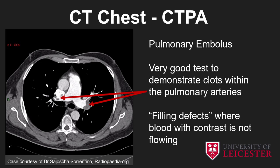Moving on to CT pulmonary angiogram — or CTPA. There are many indications for CT of the chest, but acutely CTPA plays a large role. It's a good test for clots within the pulmonary arteries. We give contrast and scan at a particular time when the pulmonary artery is nicely opacified and full of contrast. What you see are dark blobs within the pulmonary artery — filling defects — regions where blood full of contrast isn't able to flow, showing there are clots. CTPA is a really good test for picking up even very small clots in the lungs. It can also demonstrate complications such as pulmonary infarcts and suggest if there might be right heart strain.